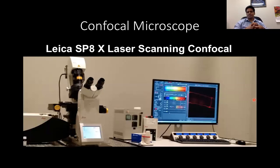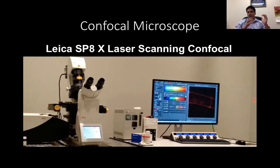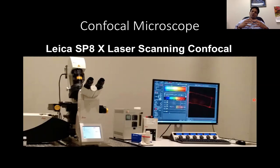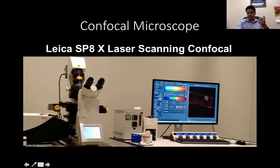What is a confocal microscope and how does it work? A confocal microscope requires that your sample has some kind of fluorescence in it. There are different wavelengths of lasers available that can hit your sample, and then your sample will show fluorescence. Whatever fluorescence your sample emits can be captured by a camera or detectors and seen in the software associated with the confocal microscope.